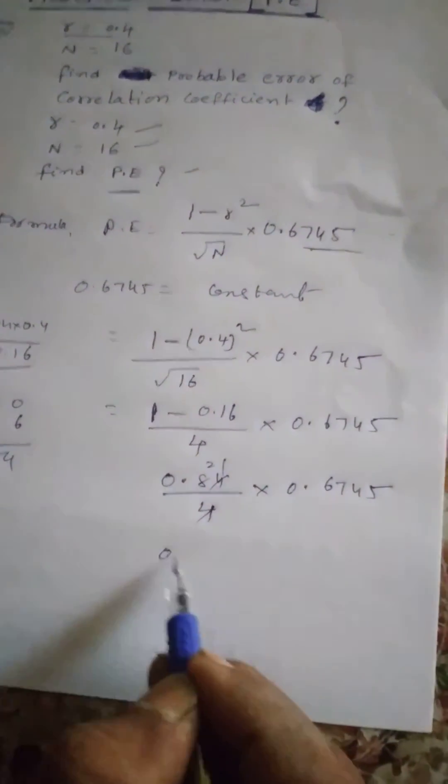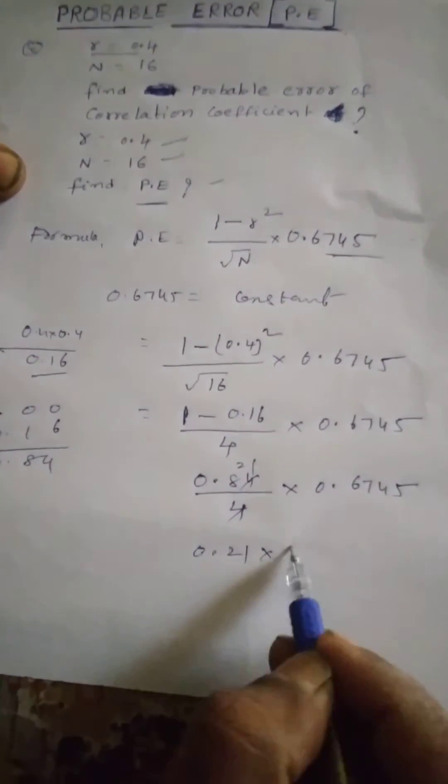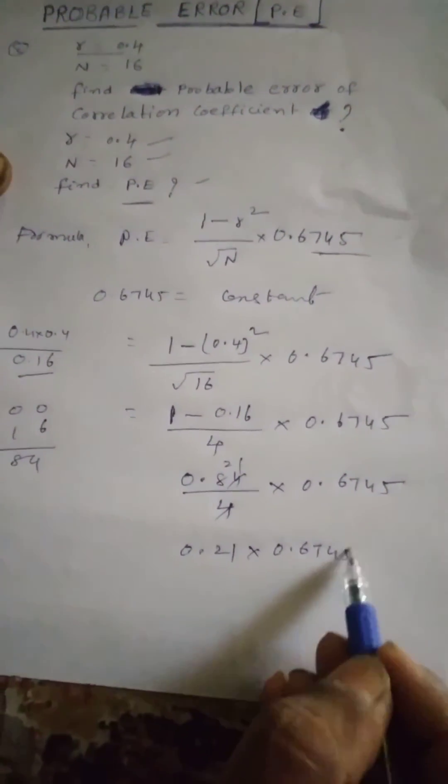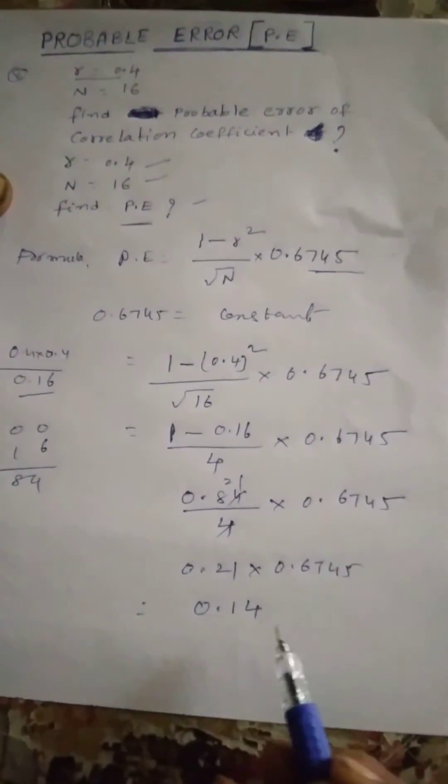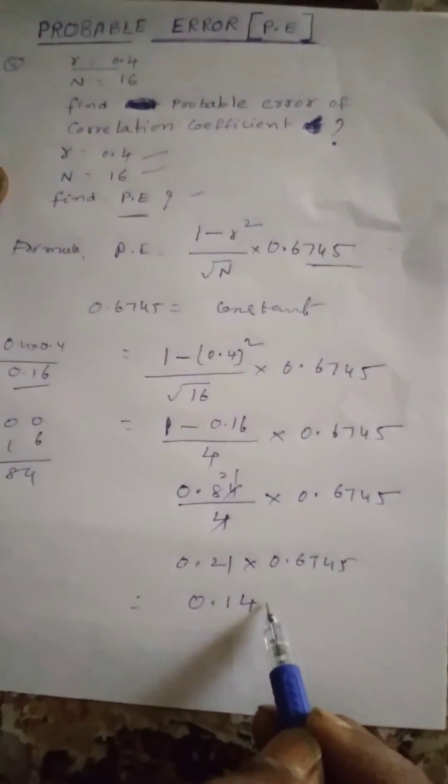So, 0.21 into 0.6745. So, 0.21 into 0.6745 equal to 0.1416.